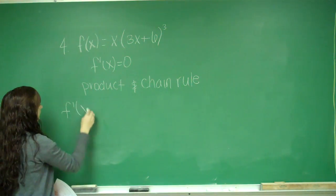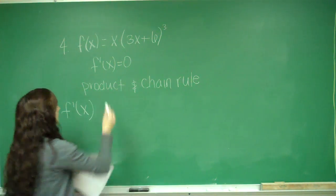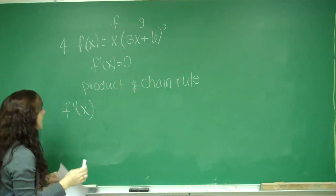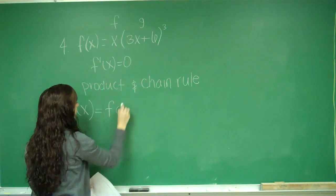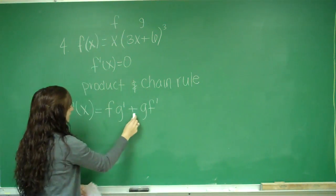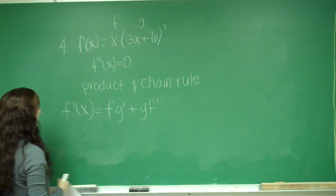So f prime of x, we're going to say that this is f and this is g. So I do mine as f times g prime plus g times f prime. Remember, because it's addition, we can do it either way.